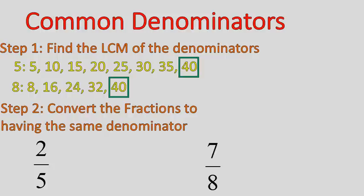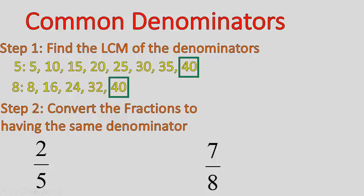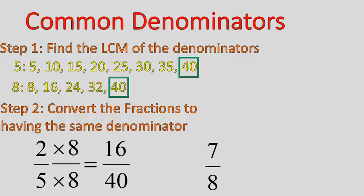Step number 2 is that we need to convert the fractions so that they have the same denominator. It's really helpful to have this list of multiples, because we have to ask ourselves: our denominator 5 times what gives us 40? You can refer back to the list — 5 times 8 gives me 40. So when you convert a fraction, you multiply the top and bottom by the same number. 5 times 8 gives me 40, so I've converted the fraction to having a denominator of 40. And you also have to remember to multiply the numerator: 2 times 8 gives 16.